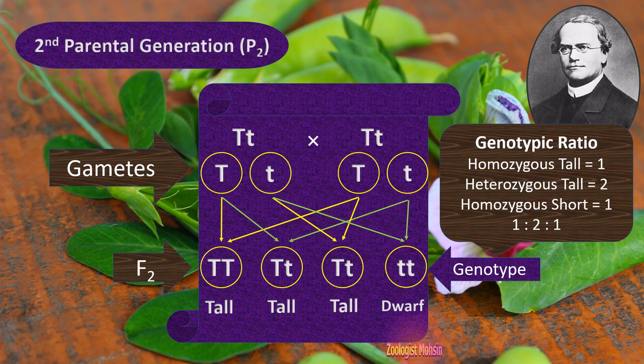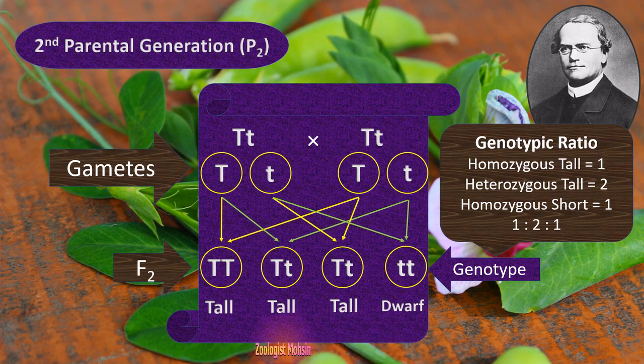So the typical genotypic ratio of the second cross in P2 and F2 was 1:2:1.